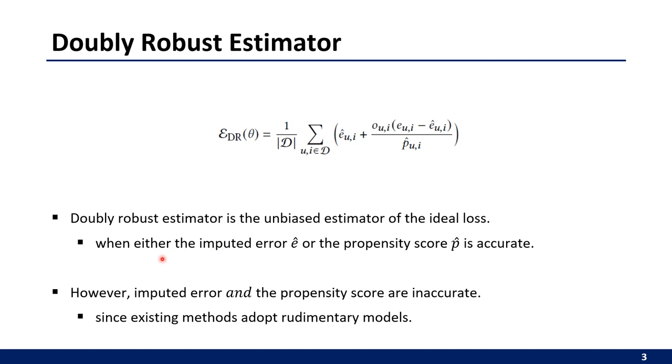However, the imputed error and the propensity score are inaccurate since existing Doubly Robust Estimators adopt rudimentary models.